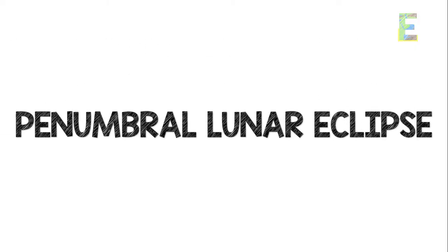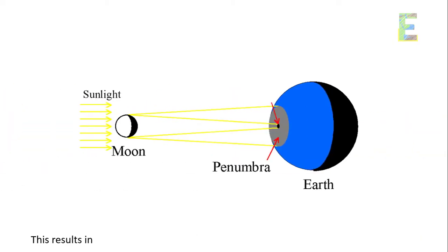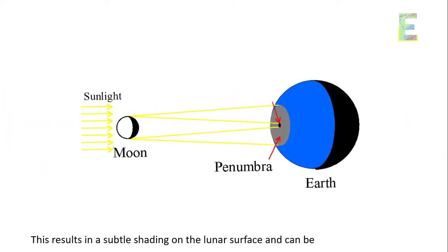Penumbral Lunar Eclipse. During the Penumbral Phase, the Moon enters the Earth's outer shadow, known as the Penumbra. This results in a subtle shading on the lunar surface and can be challenging to notice.